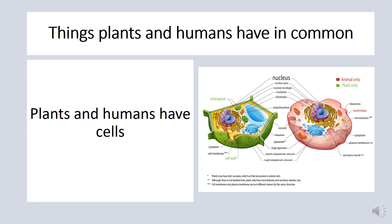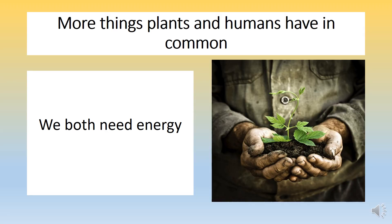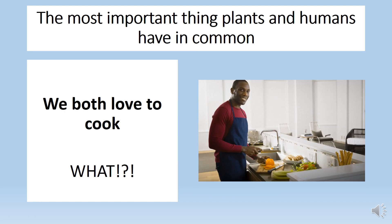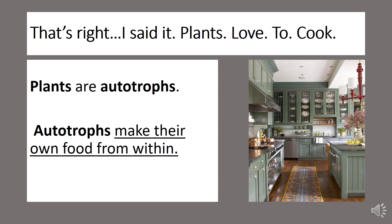Believe it or not, plants and humans actually have a lot in common. We both have cells. We both need energy. We both love to cook. Plants love to cook. The first thing you need in order to cook is a kitchen. A plant has just that — the plant uses its kitchen to make its own food. Organisms that make their own food from within are called autotrophs.